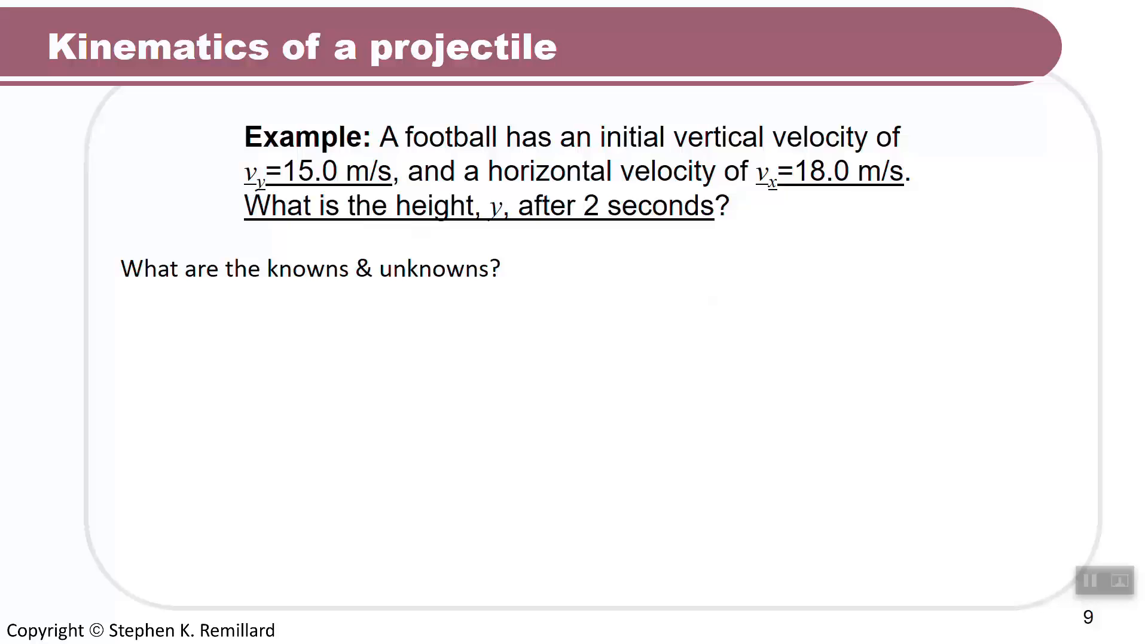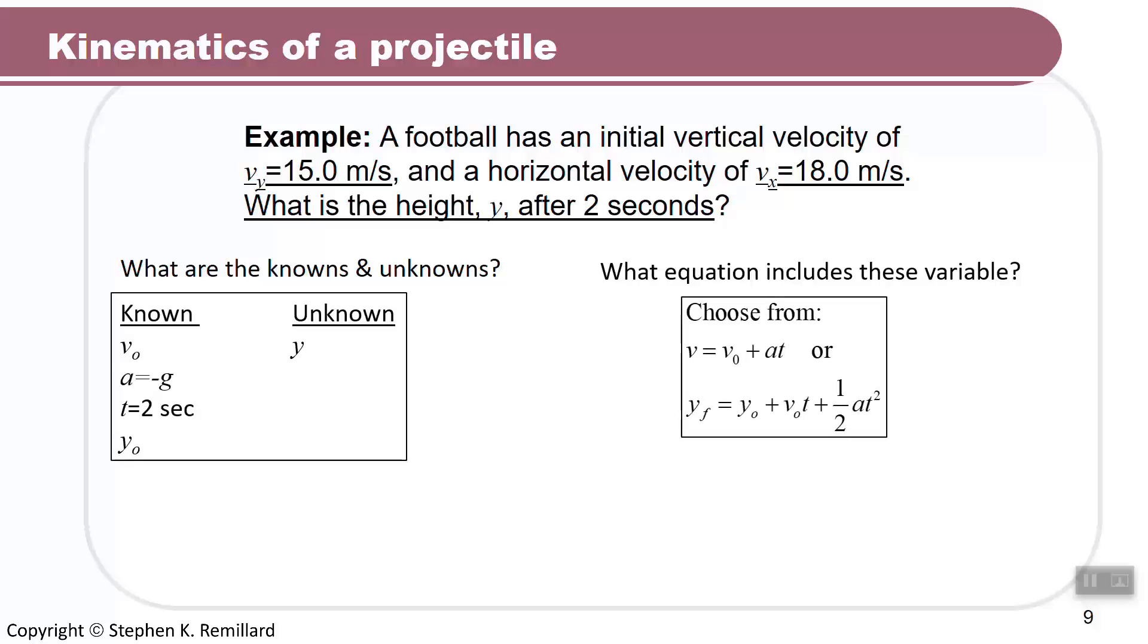I think we're asking the vertical world how high it goes, right? Because the horizontal world has no idea that it's doing anything vertically. So it's definitely a vertical question. Which means we have access to the acceleration equal to minus 10 meters per second squared. The correct initial velocity is 15 meters per second. And the time is 2 seconds. We also know the initial height is 0, y sub 0. So our unknown is how high it is. So our unknown is y. So we're going to calculate y compared to an initial height of 0. Which equation gives that to us?